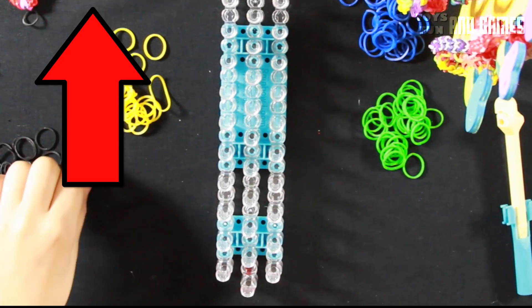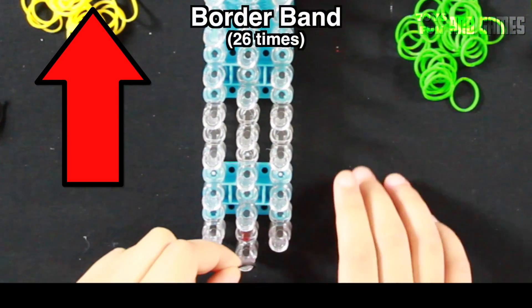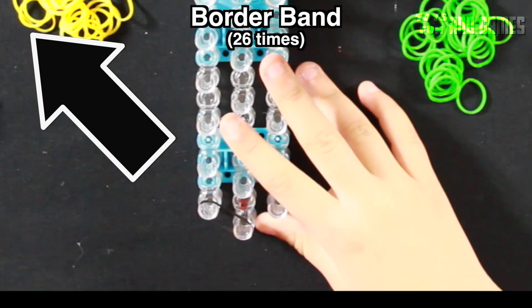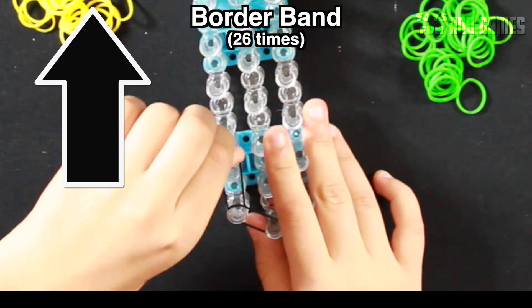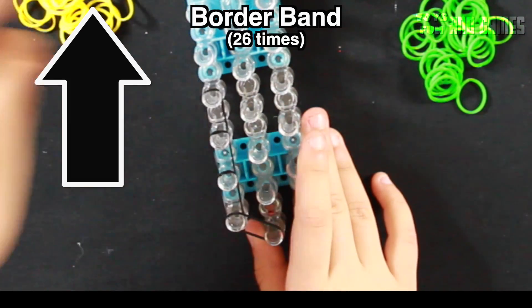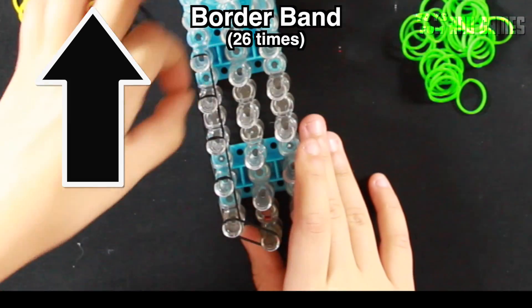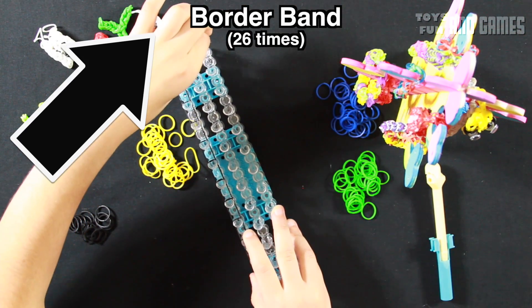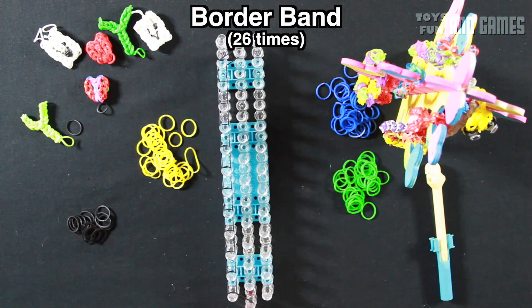So what you're going to do first is grab your first rubber band and put it there, and bring it to the left. And then we're going to go up, up, up, and up. We're going to keep doing this. And here we reach the end of the loom, I mean the top of the loom.